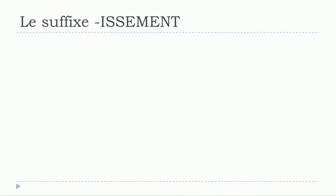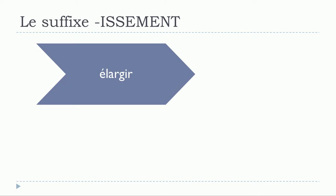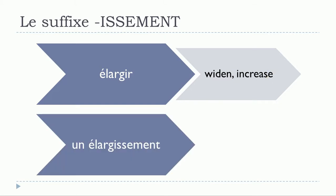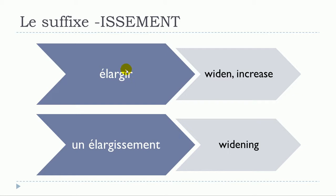Let's see a few examples. The first one: 'élargir' — and you can see the translation in English — gives us 'un élargissement'. As we saw, you just need to take away the '-ir' from the verb and replace it with '-issement', and you get 'un élargissement'.